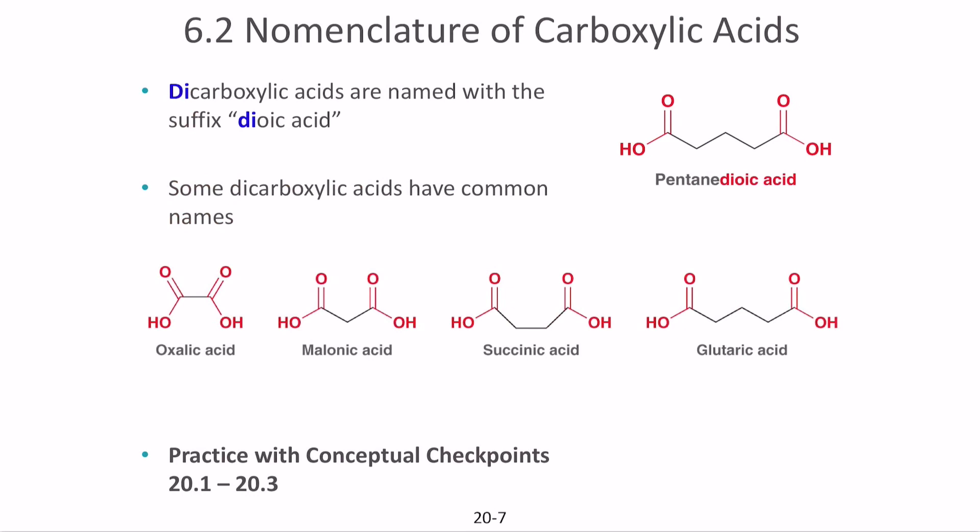Dicarboxylic acids have two carboxylic groups, one at each end of the chain. This is possible for compounds that contain long chain structures. We call these 'dioic acids' — we keep the original alkane name and simply replace the ending with 'dioic acid.'